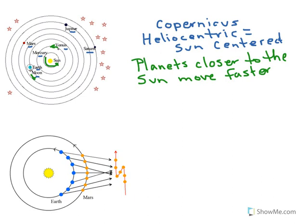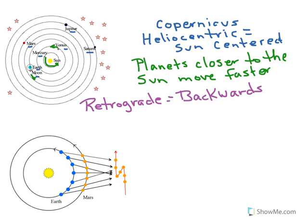This is important because it is going to be key to explaining retrograde motion — where planets appear to move backwards. In this system, all the planets are orbiting in the same direction. We picture looking down from Earth's north pole on the solar system, and from that perspective, all the planets are orbiting counterclockwise around the Sun.